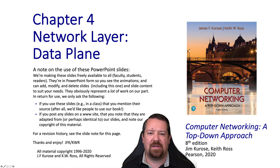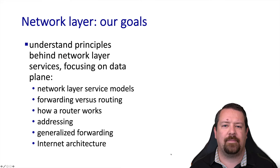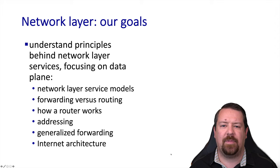As before, we're using slides provided by the authors of the book, Jim Kuros and Keith Ross. As we talk about the network layer, we'll follow a similar format to that which we've used in previous chapters: first understanding the principles of operation, followed by specific implementations of internet protocols.